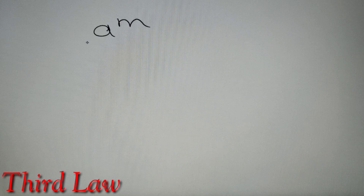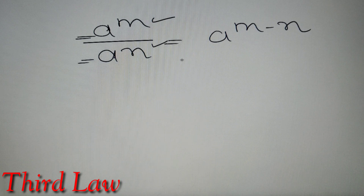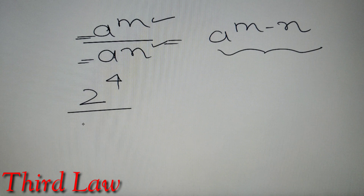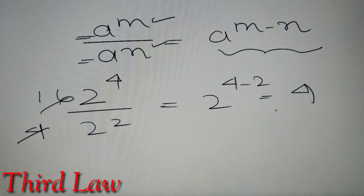The third law says that if we have A raised to power M divided by A raised to power N, the result is A raised to power M minus N. Both bases in the numerator and denominator are the same; the powers can be different or same. For example, 2 to the power 4 divided by 2 to the power 2 gives 2 to the power 2, which equals 4. Verifying: 16 divided by 4 equals 4. So this property is also true.